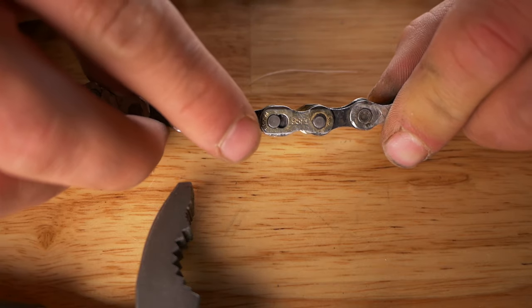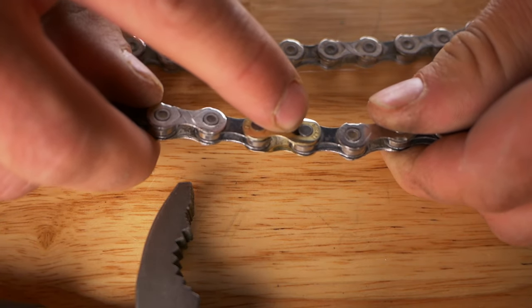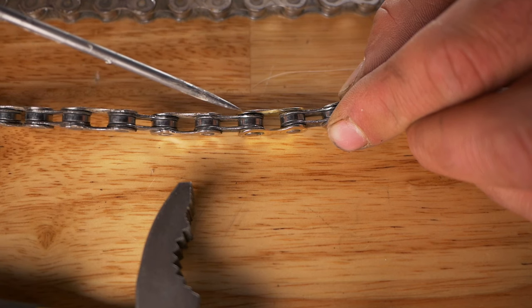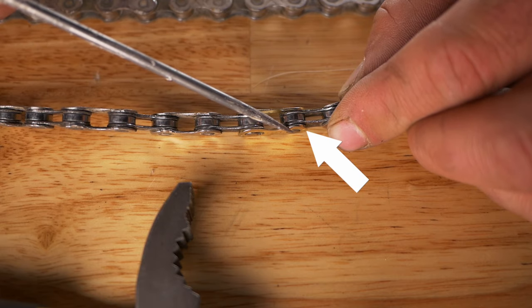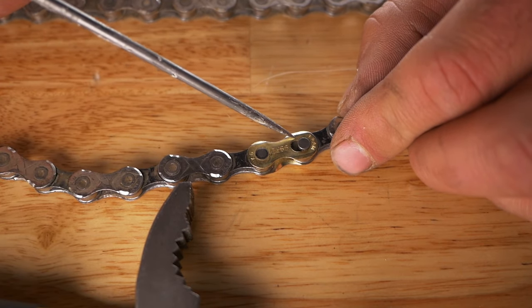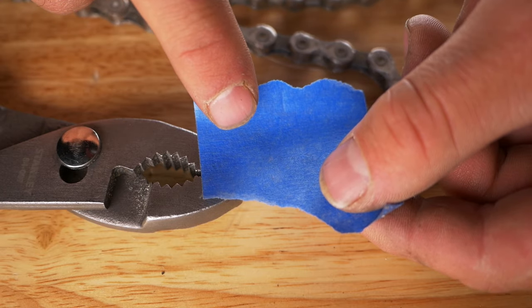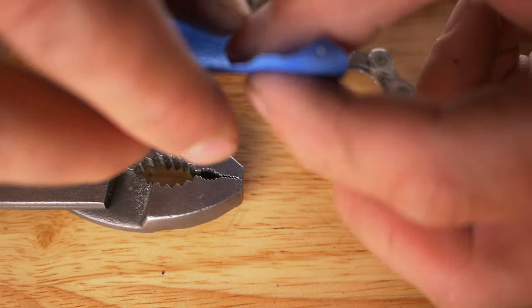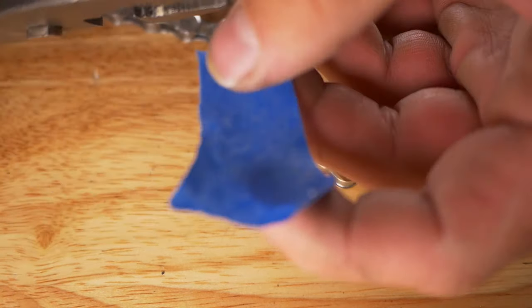The first thing you need to do is identify where the slots are on each side. Notice they're opposite of each other. So we're going to put pressure on right here and here, allowing these sides to open up. So that you don't damage your chain, attach a piece of painter's tape or any tape to the teeth part.